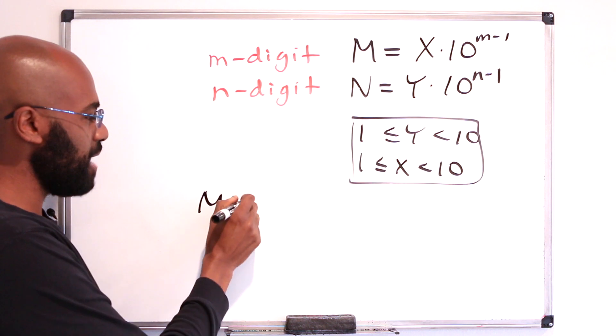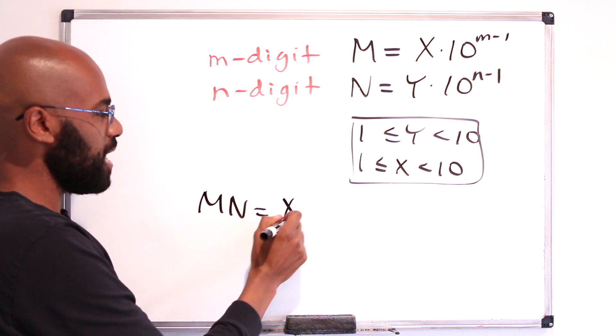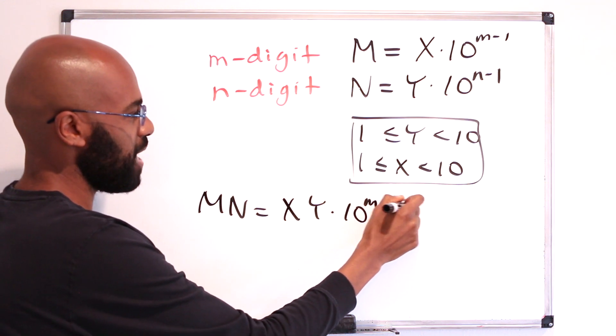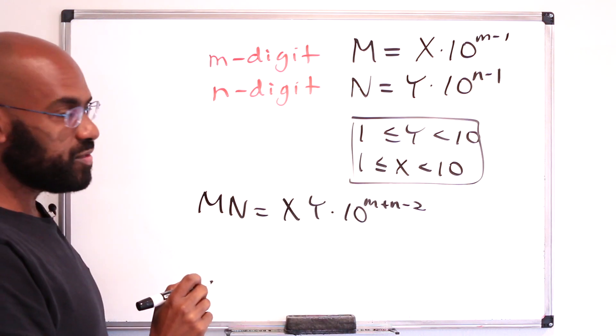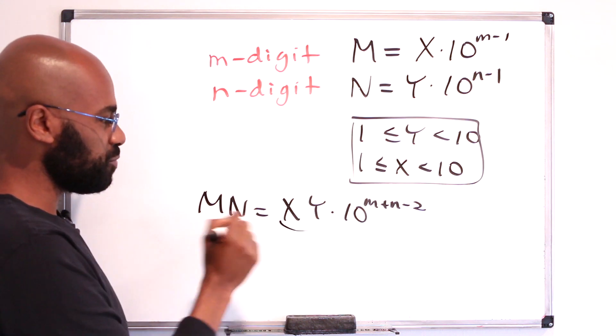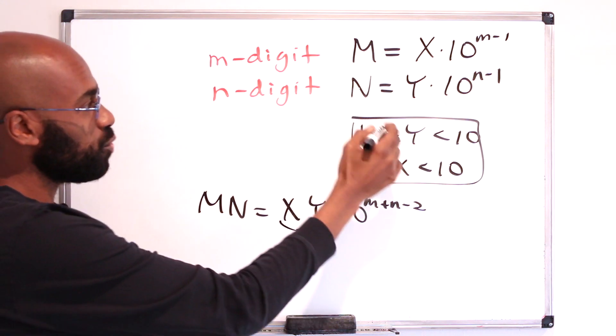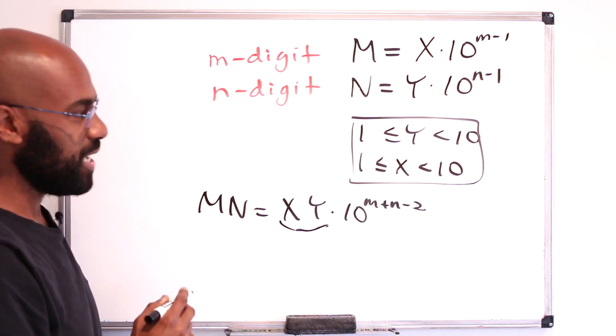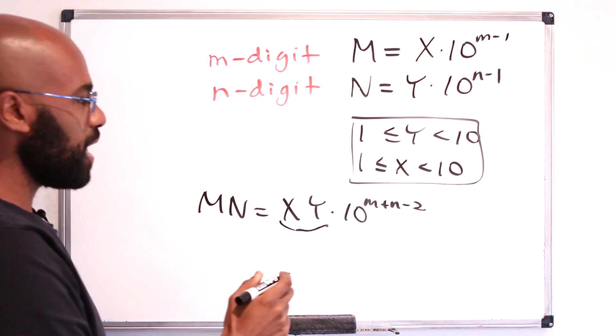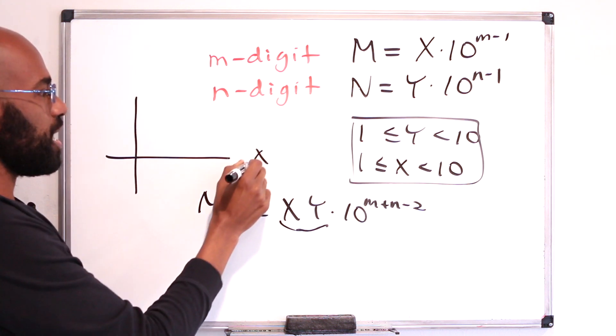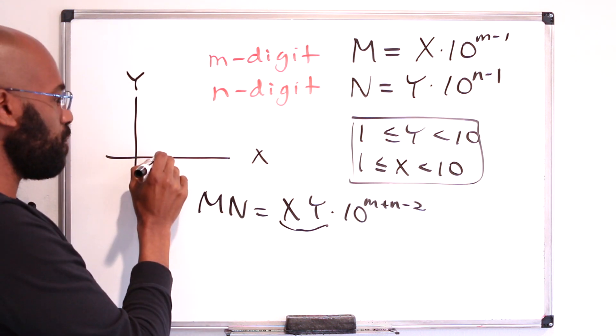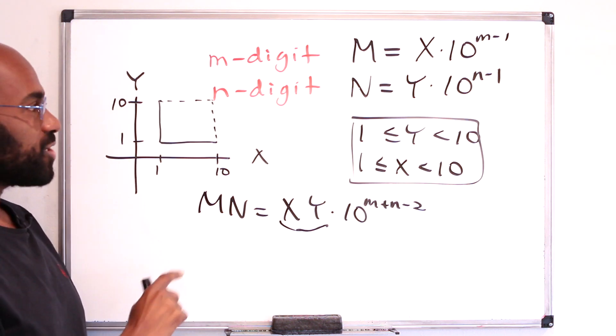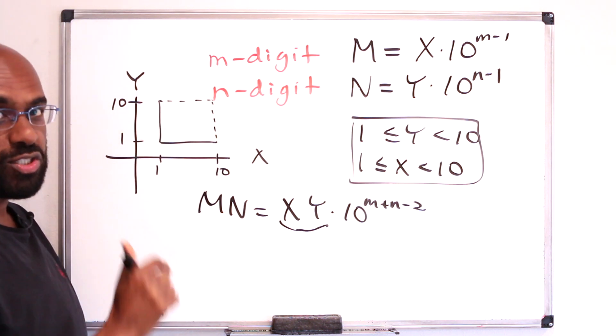Okay, so let's look at the product then, mn. mn is going to be xy times 10 to the m plus n minus 2. Now the number of digits in this integer really depends on what this product xy is. Since 1 is less than or equal to y is less than 10, and 1 is less than or equal to x is less than 10, we can draw a diagram plotting x and y going from 1 to 10 on each axis, and the pairs xy will land in this box region right over here.